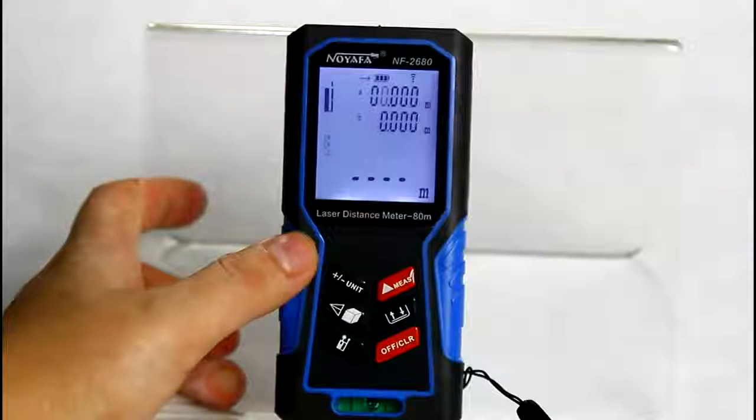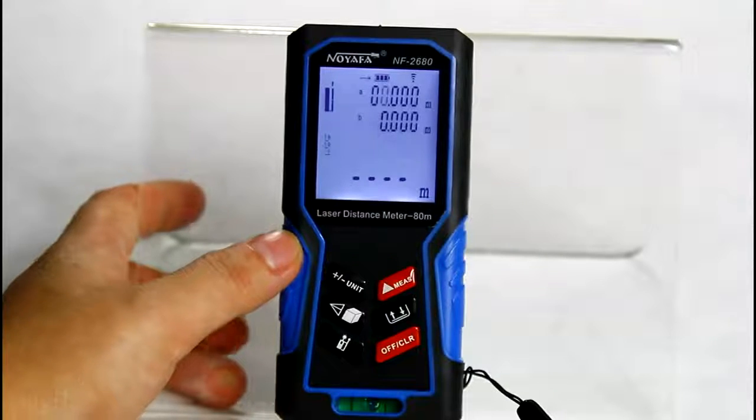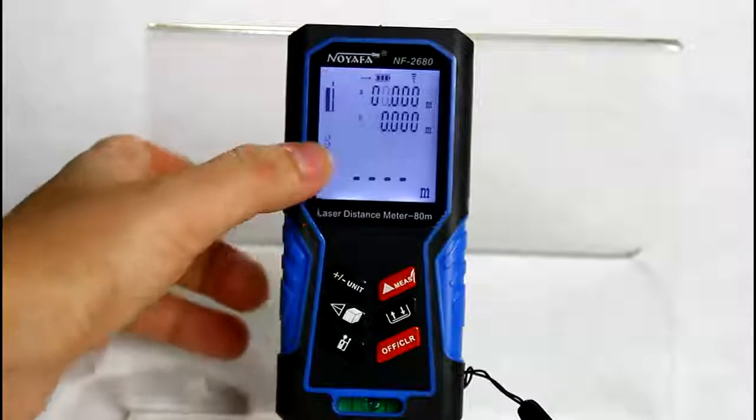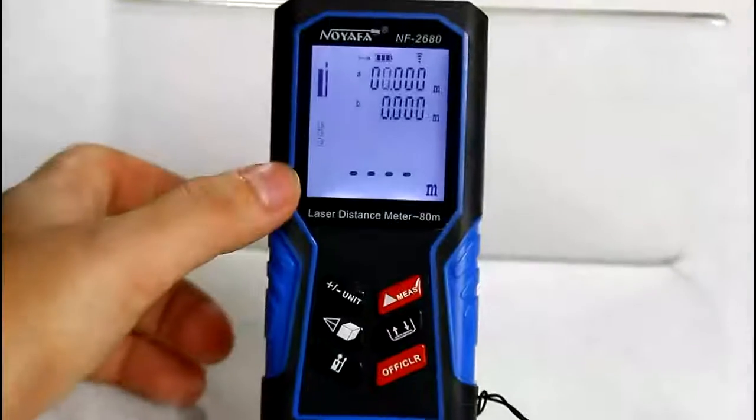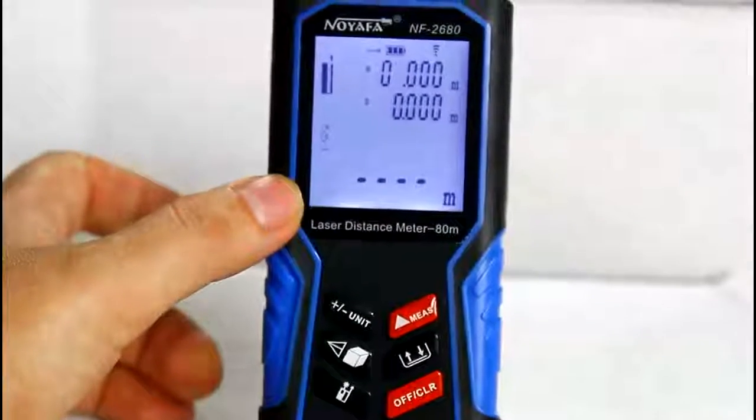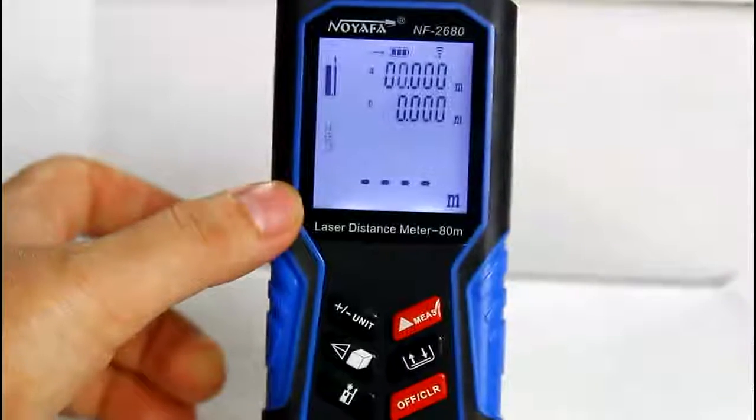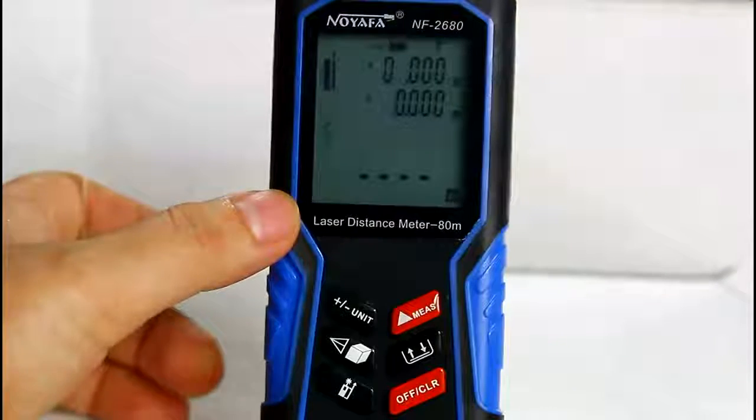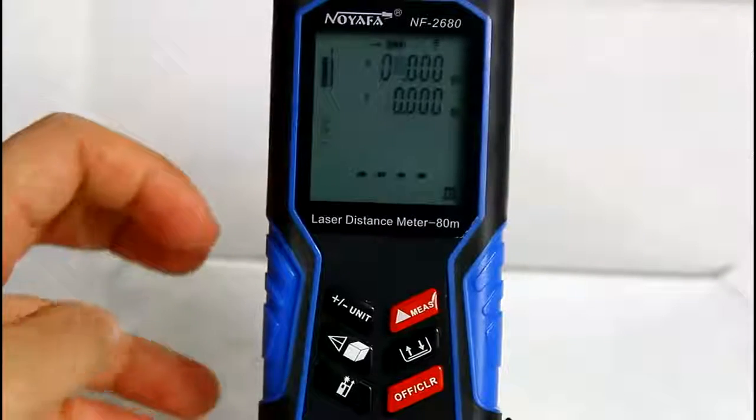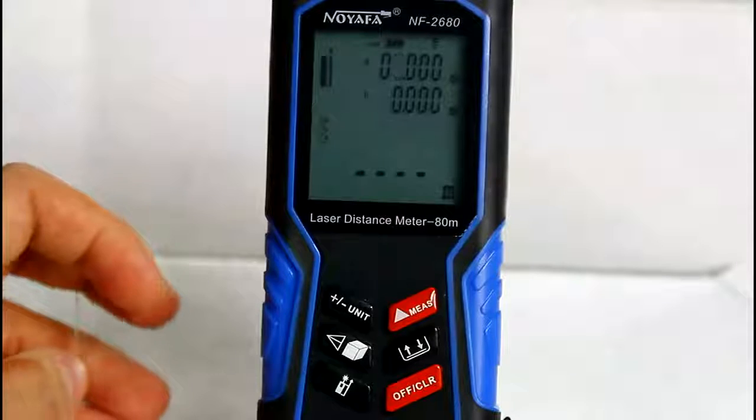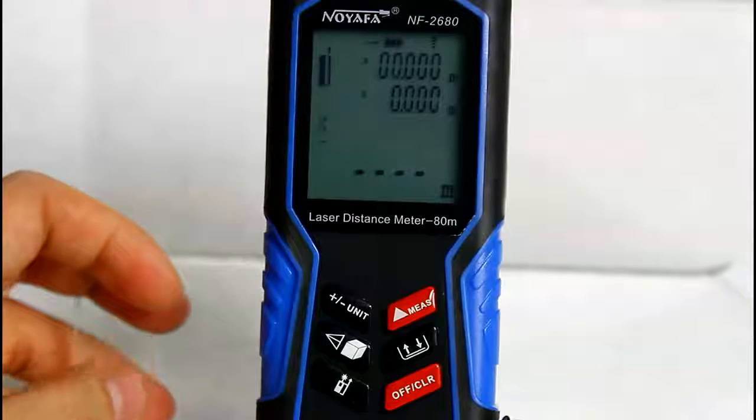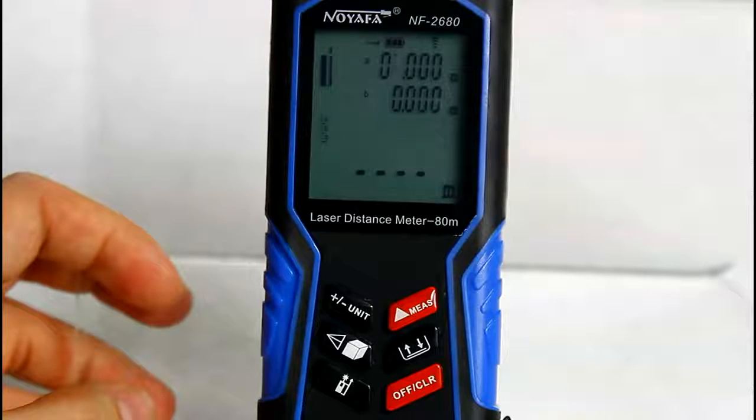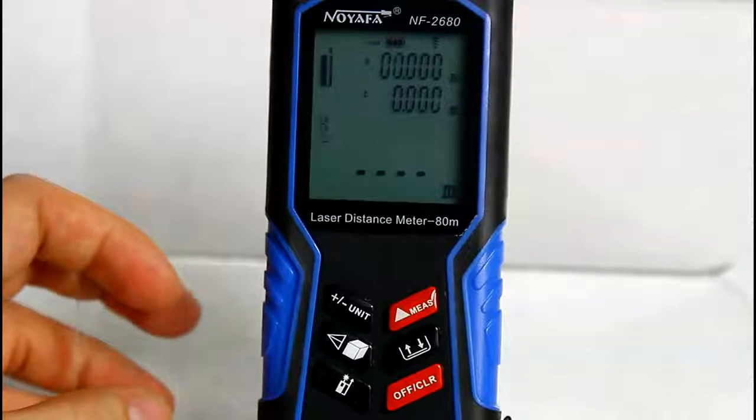In this mode, we firstly need to set two reference values, A and B. A can be any number, which is the starting distance. B is the value for the equal distance interval you'd like to measure. Let's adjust A to 0.4 meters.